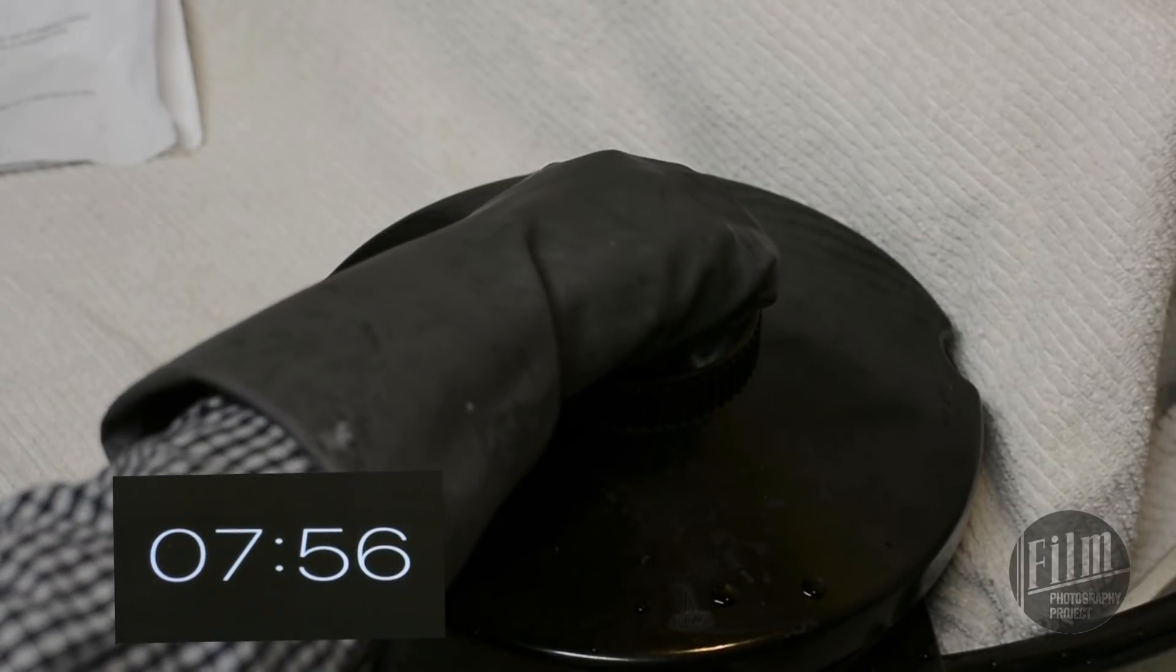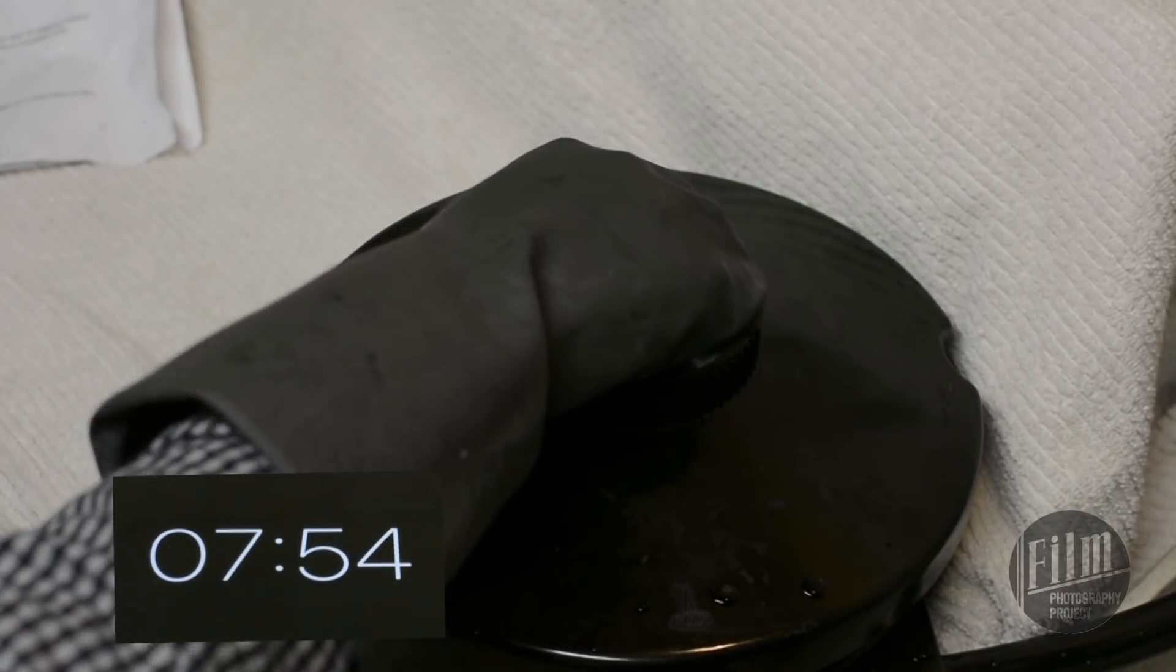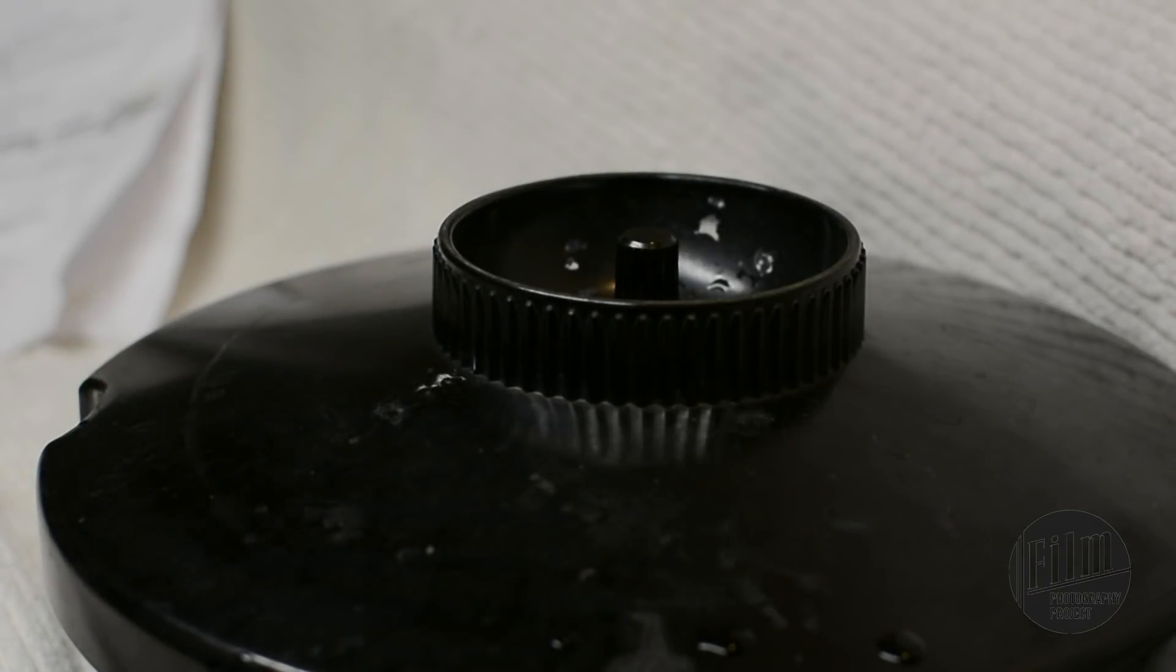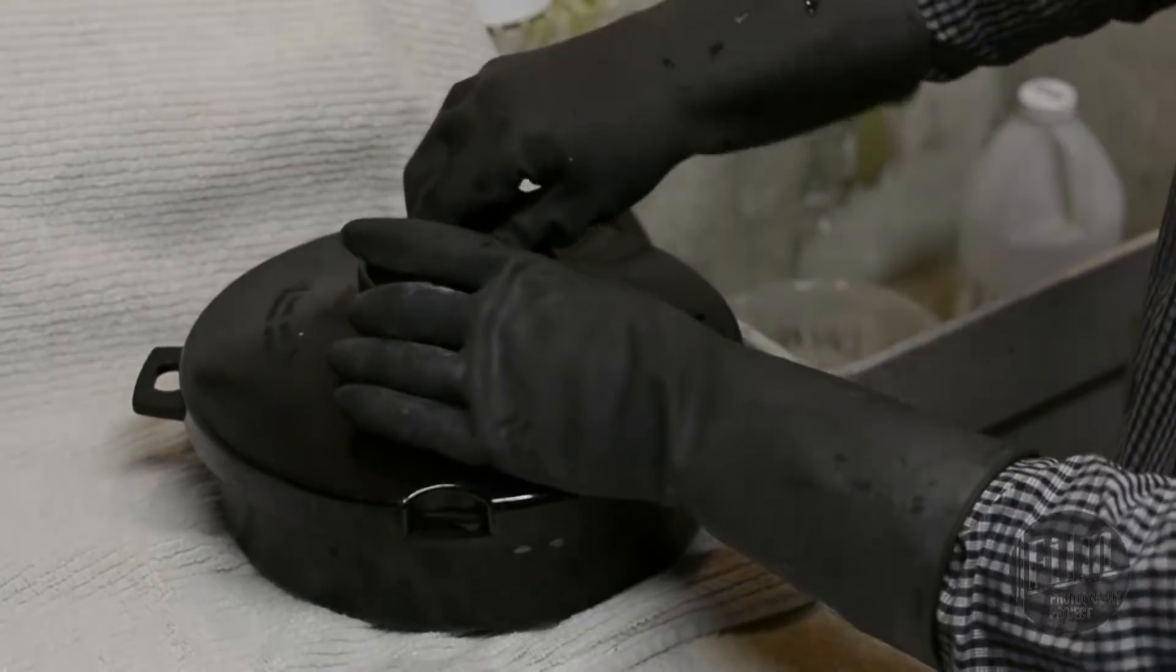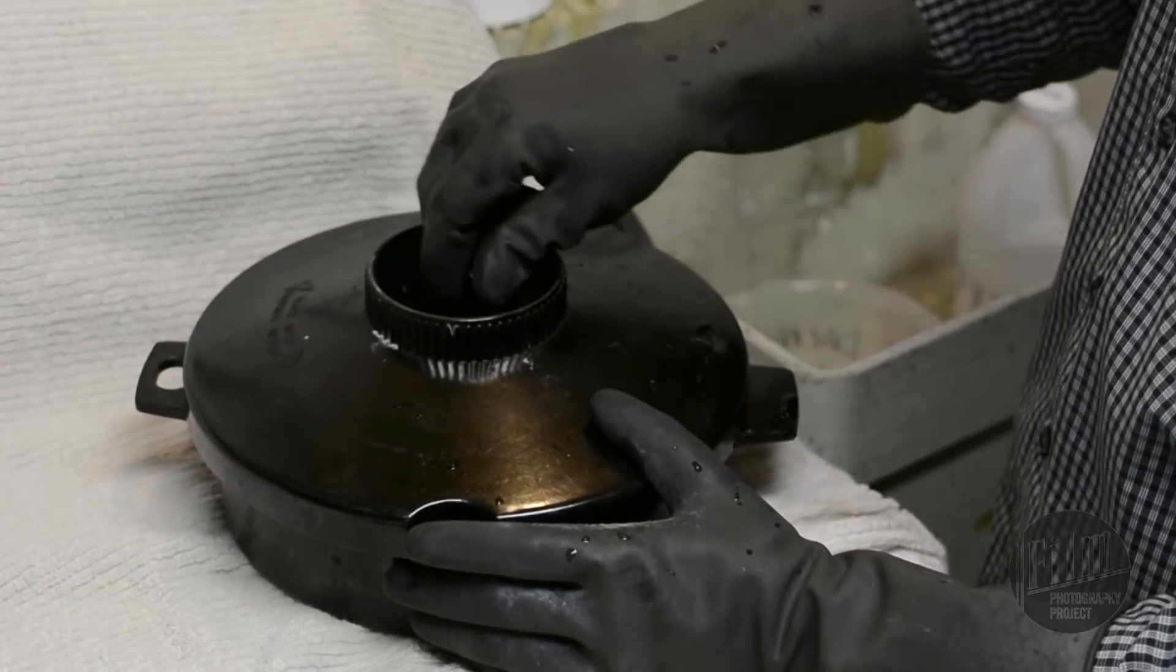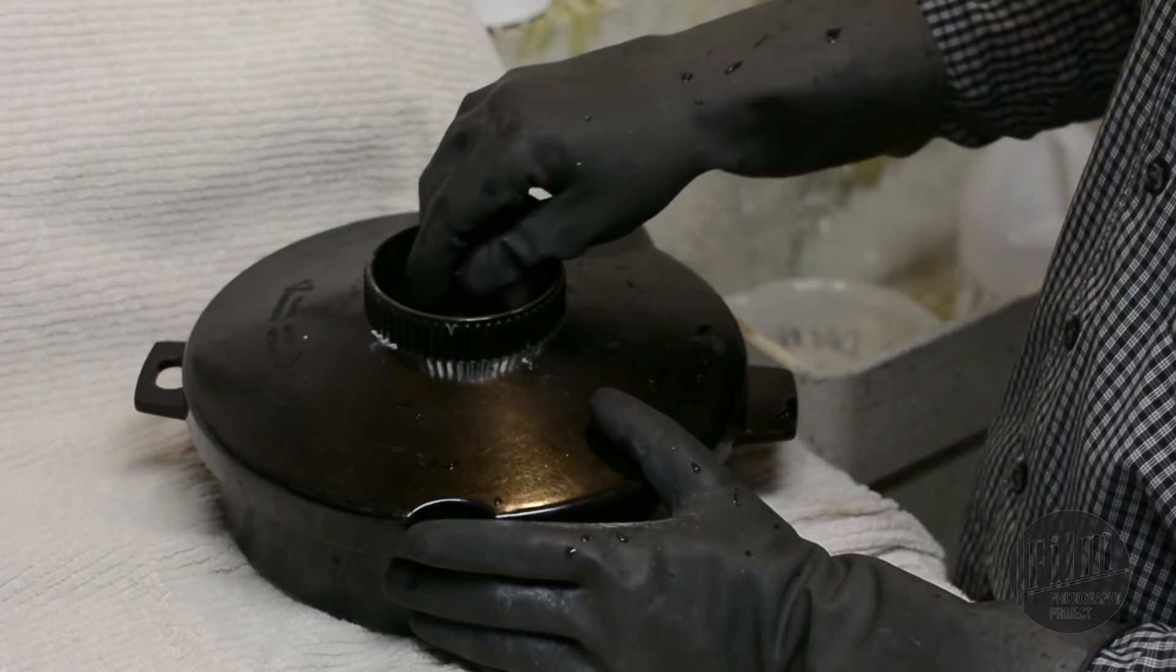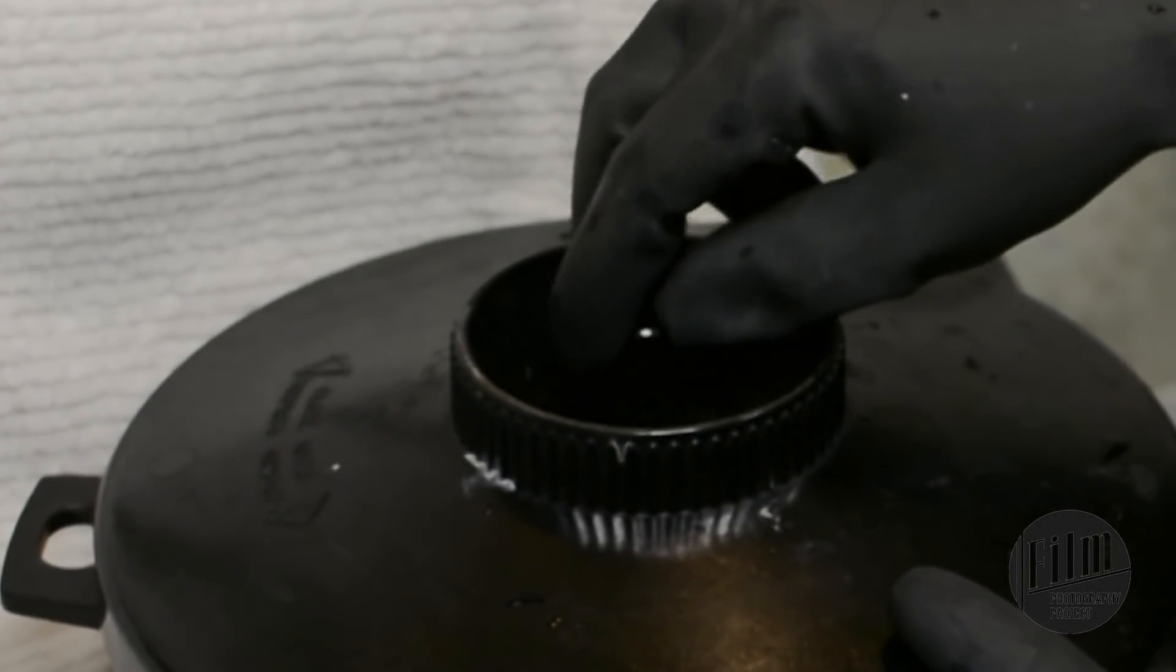Start a timer for 8 minutes. Immediately jiggle the agitator up and down for about 5 seconds to remove any air bubbles. Twist the agitator 90 degrees and let it sit for 20 seconds. Agitate every 20 seconds until the timer is up. How often you agitate supposedly affects the sharpness of the film. I don't know if it's true, but I've had great results with this method.